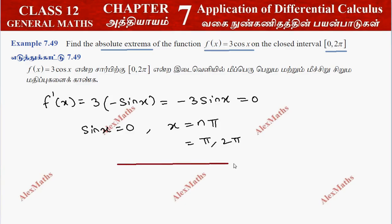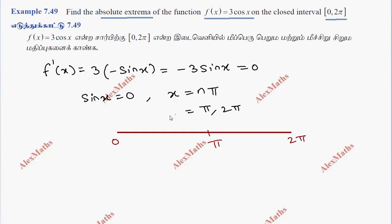Since the closed interval is [0, 2π], we check which values fall within it. We have x = 0, x = π, and x = 2π — so there are 3 values: 0, π, and 2π.